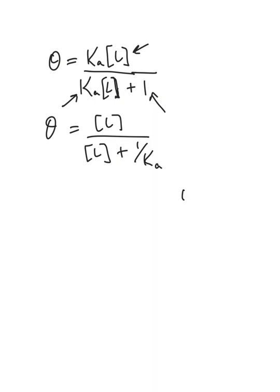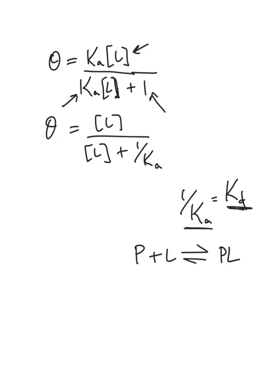We also know that Ka and Kd have an inverse relationship. The equilibrium constant of association and the dissociation constant are just inverses of each other — Kd equals 1/Ka. So that 1/Ka term in the denominator can be written as Kd, giving us theta equals L over L plus Kd. That was one of the equations I gave on your equation sheet, and now you've seen the full derivation. Hopefully you found this helpful — please follow up on Piazza or comment here with any questions.